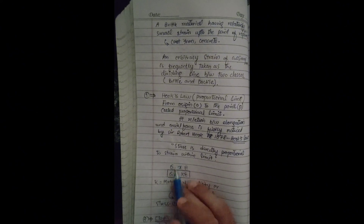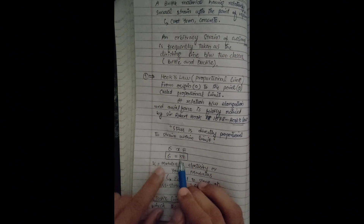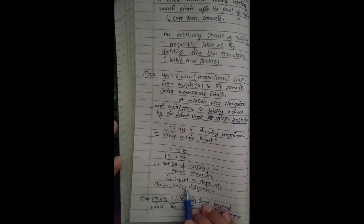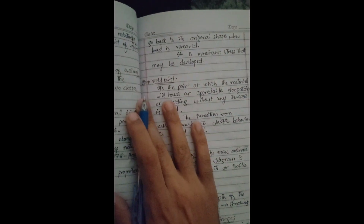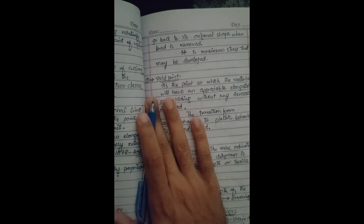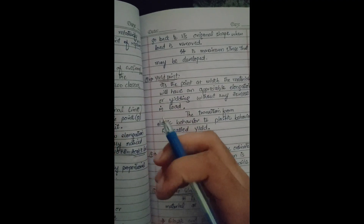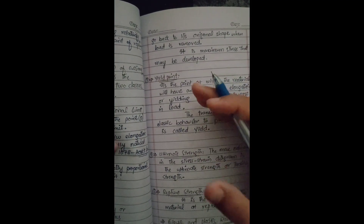The constant in Hooke's law is called the modulus of elasticity or Young's modulus. This Young's modulus is equal to the slope of the stress-strain diagram. The second point in the stress-strain diagram is the elastic limit — the limit beyond which the material will no longer return to its original shape when the load is removed. It is the maximum stress that may be developed without causing permanent deformation.